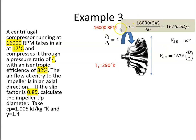Okay, so omega works out to be 16,000 divided by 60 multiplied by 2 pi, so that's 1676 radians per second. So VBE is going to be 1676 times R, and R is just D over 2, which is what we have to determine.